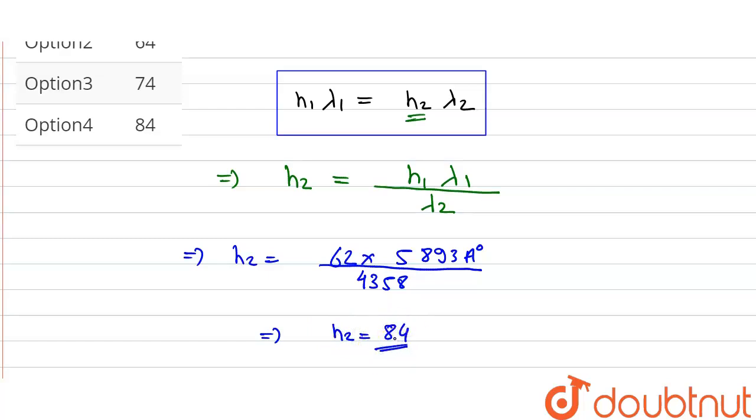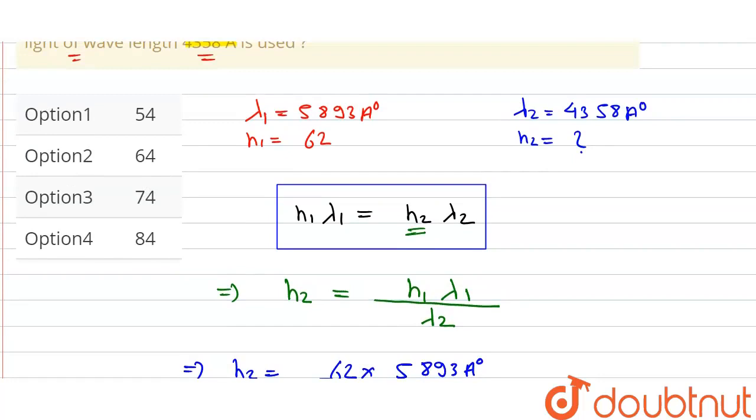Here we have got the number of fringes for the violet light is 84. Now we will check in our options. Option number 4 is our correct answer. Thank you.